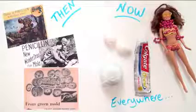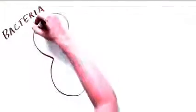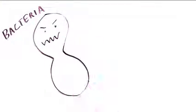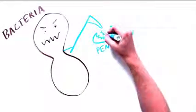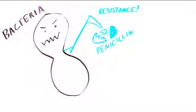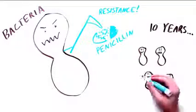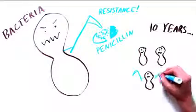Around the same time as penicillin was isolated, scientists had their first encounter with antibiotic resistance. A bacteria was discovered that could destroy the new wonder drug. Within 10 years, penicillin resistance was widespread, and people wanted a solution.